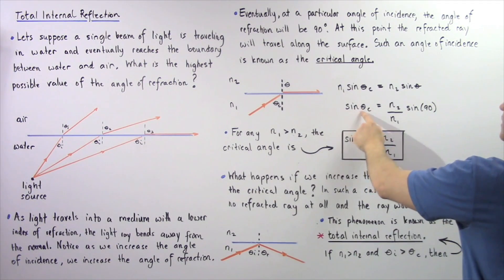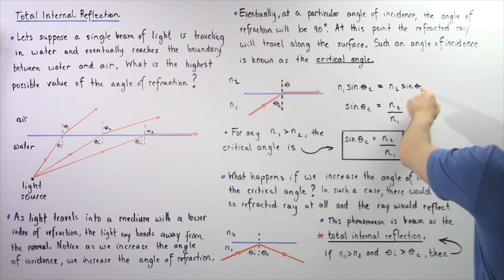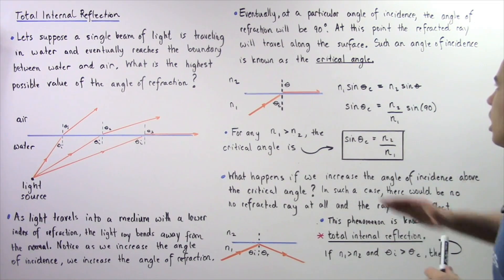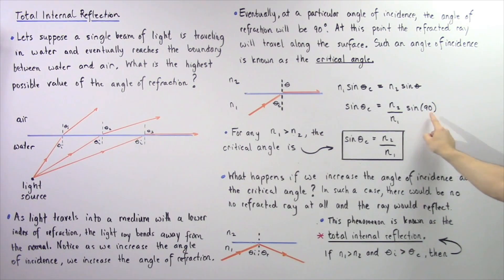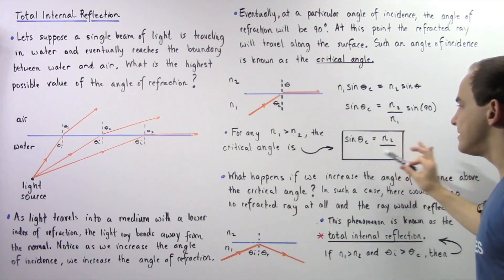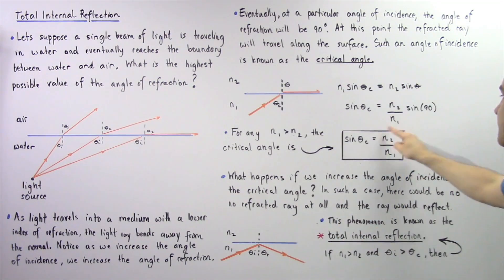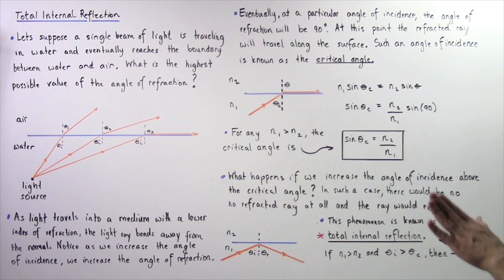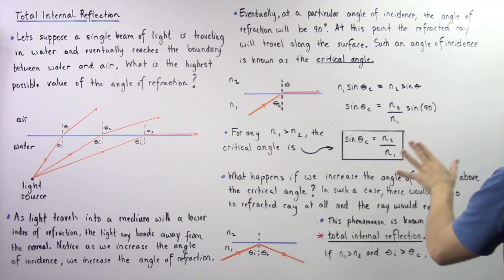Let's rearrange and solve for sine of theta_C. Sine of theta_C equals N2 divided by N1, multiplied by the sine of the angle of refraction. By definition of the critical angle, the angle of refraction must be 90 degrees. Since sine of 90 is 1, the equation simplifies to: sine of theta_C equals N2 divided by N1. Because N1 is always greater than N2 in this case, this fraction will always be less than 1. So for any N1 greater than N2, the critical angle is given by this equation.